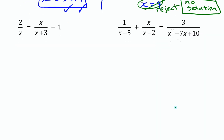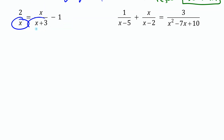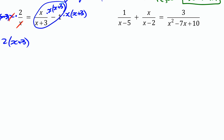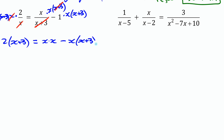In this third equation we have two different denominators: x and x plus 3. We need to multiply every term by both x and x plus 3 to clear all the fractions. For the first term, the x cancels and we're left with 2 times x plus 3. For the second term, the x plus 3 cancels and we're left with x squared. For the third term, there's no denominator to cancel so we keep x times x plus 3.